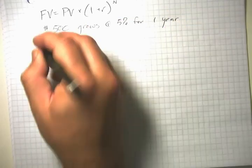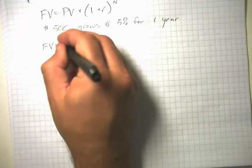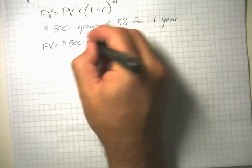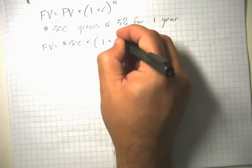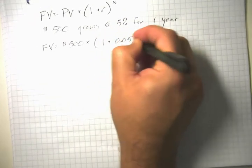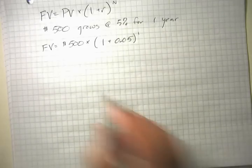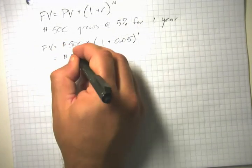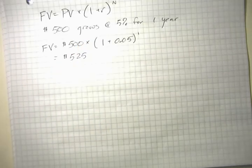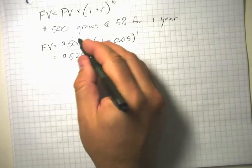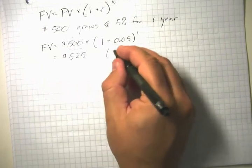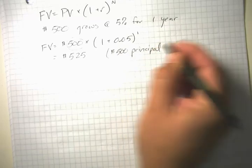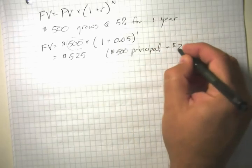the future value equals $500 times (1 + 0.05) raised to the first, which equals $525—our original $500 of principal plus $25 of interest.